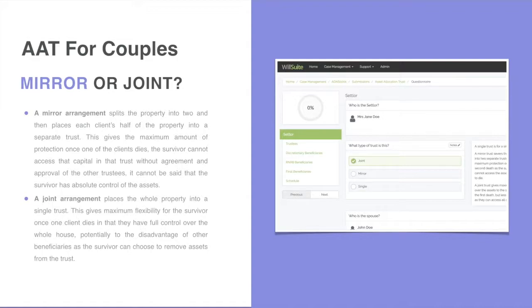For some customers, however, a joint arrangement is more appropriate. This places the whole property into one single trust, giving the maximum flexibility for the survivor once one client dies, in that they have full control over the whole house — potentially to the disadvantage of other beneficiaries, as the survivor can choose to remove the assets from the trust.